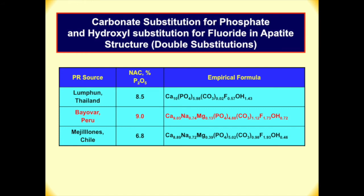Biova rock from Peru shows a neutral ammonium citrate solubility of 9.0 — very high. The carbonate substitution is 1.12 — quite high — and the OH substitution is 0.72 — also quite high. This explains why Biova phosphate rock is so high in reactivity.